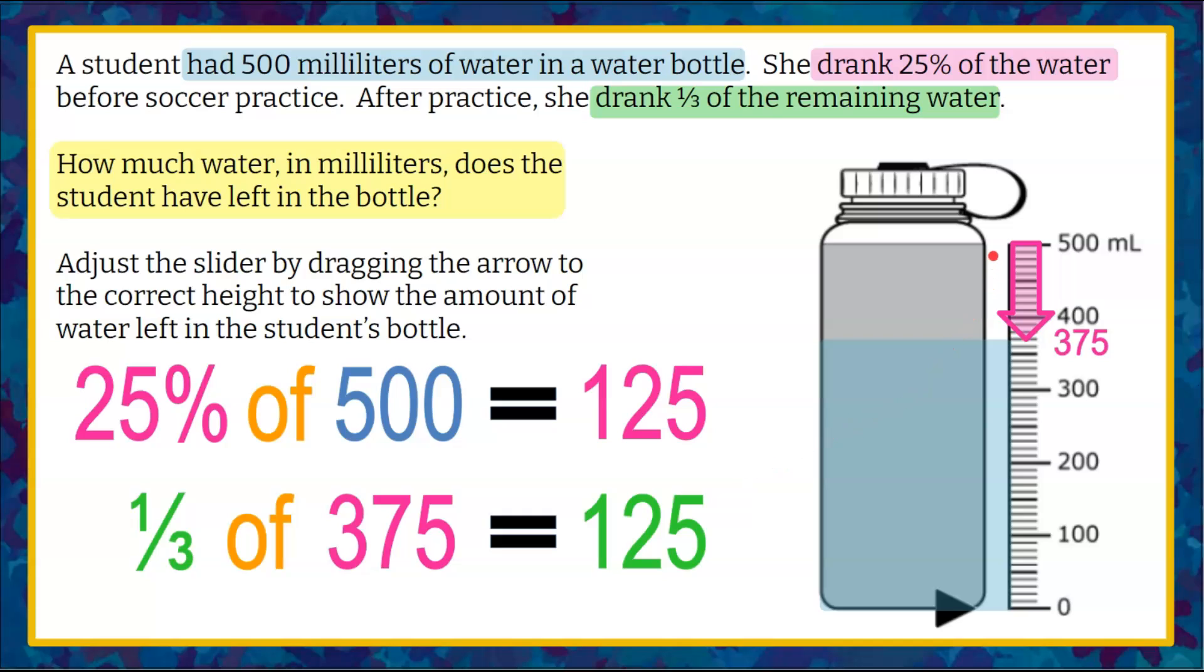So that means before practice, she drank 125 milliliters, which dropped her to 375. And then after practice, she drank another 125 milliliters. And 375 subtract that 125 brings us to 250 milliliters. So the amount of water left in her bottle at the end of her drinking after practice is 250 milliliters of water.